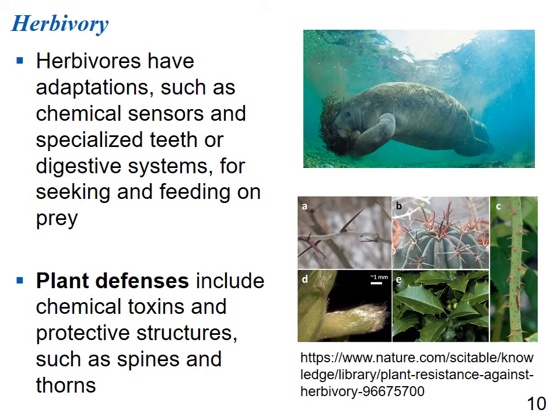Herbivory — herbivores are essentially plant predators. Herbivores have adaptations like chemical sensors and specialized teeth or digestive systems for seeking and feeding on plants. Plants don't take this well, so they have defenses including chemical toxins and protective structures like spines and thorns. The textbook didn't have good pictures of this, so the instructor found an article from Nature with good examples of plant defenses.